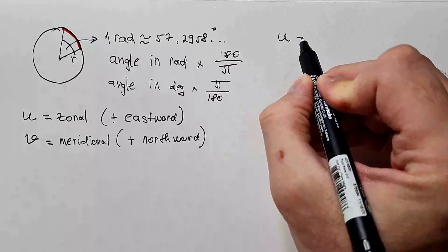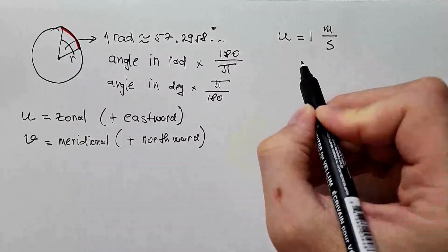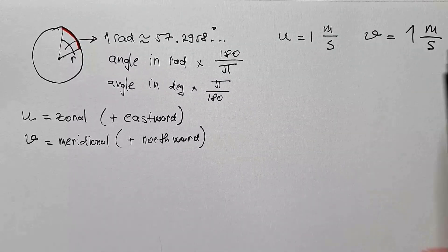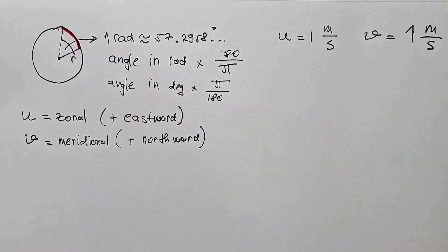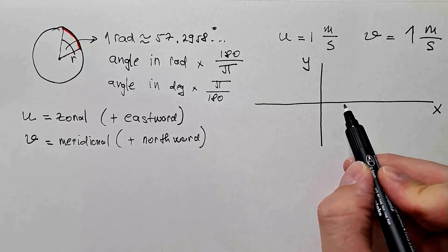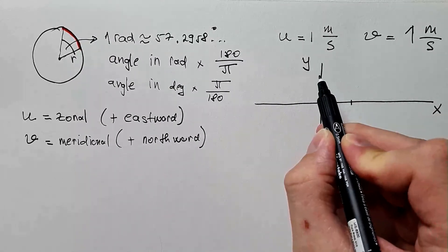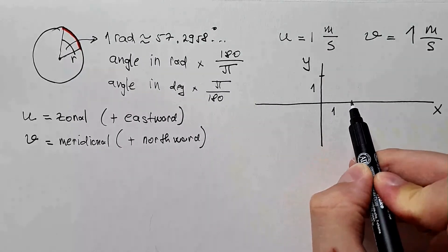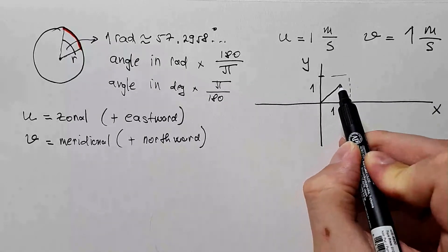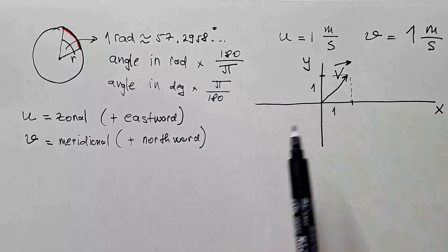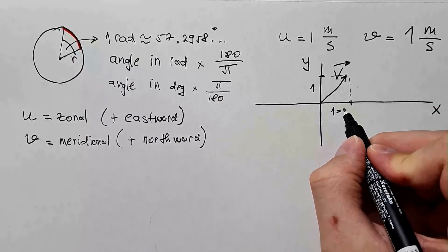So let's say U is equal 1 m per second, and V is also equal 1 m per second. Now, let's plot these two components in Cartesian and polar coordinates. In Cartesian coordinates, this would be positive x, this would be positive y, and let's say this is one unit, and this is also one unit. This would be 1 m per second, and this would be 1 m per second, therefore this would be vector V associated with U. This is U component, and this is V component.